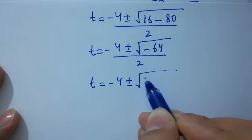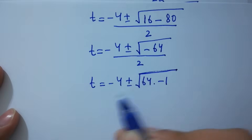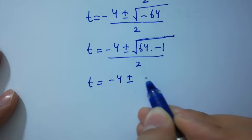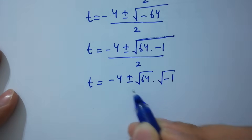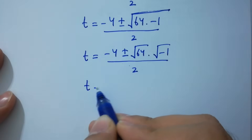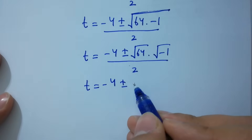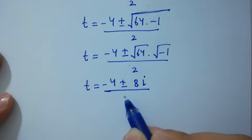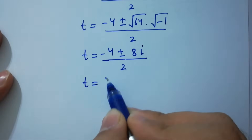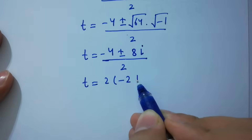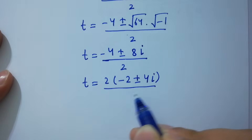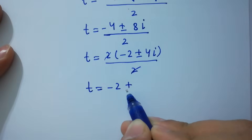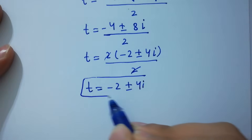We have the square root of negative 64, which equals square root of 64 times square root of negative 1. The square root of 64 is 8, and the square root of negative 1 is i from complex numbers. So t equals minus 4 plus or minus 8i over 2, and canceling the 2 gives t equals minus 2 plus or minus 4i, which are our two complex solutions.